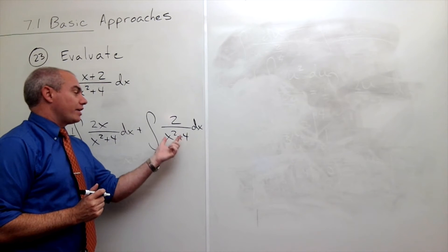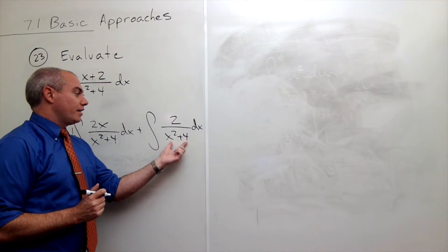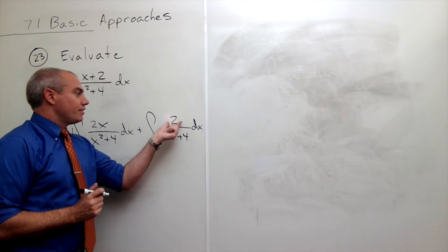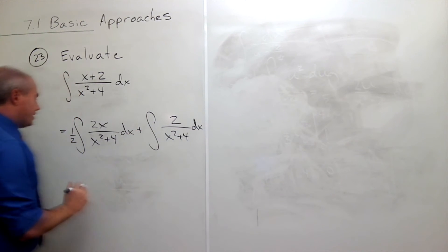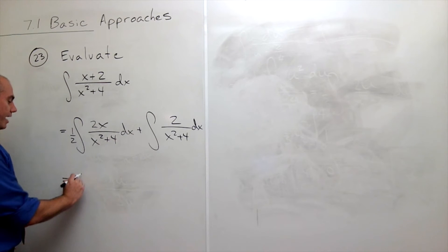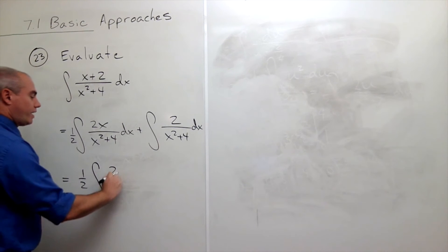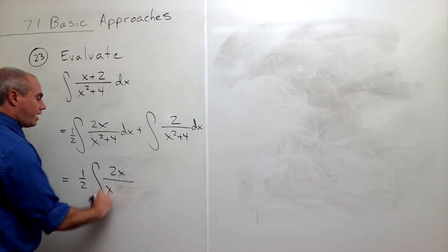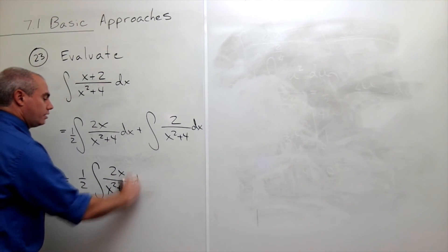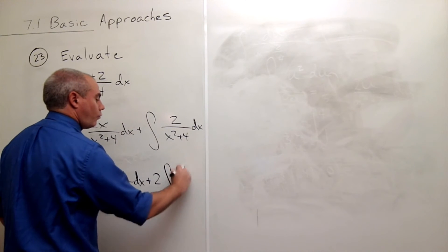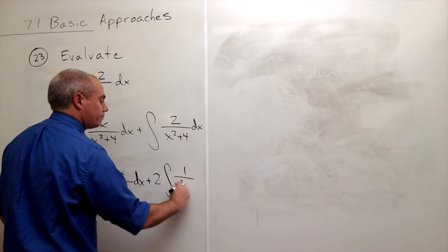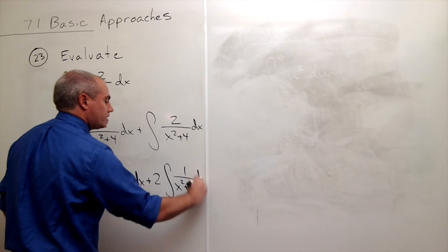This one is very close to being tan inverse of something. The 2 is there. I could easily move the 2 outside, and so let's rewrite this as 1 half integral of 2x over x squared plus 4 dx plus, we'll bring that 2 out, integral of 1 over x squared plus 4 dx.